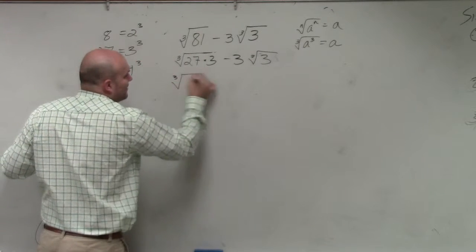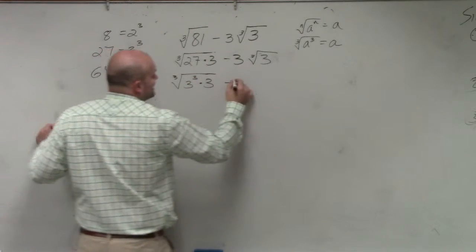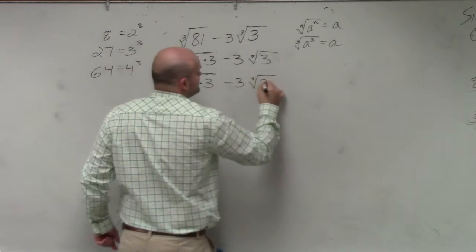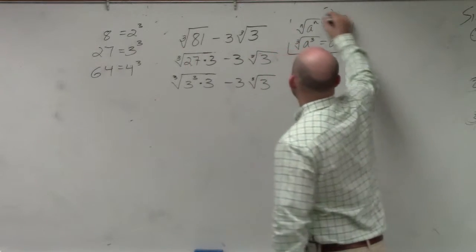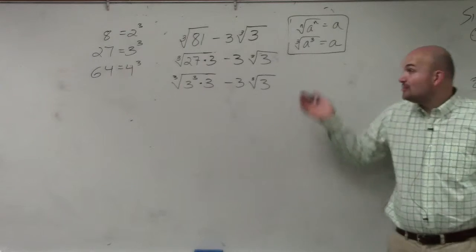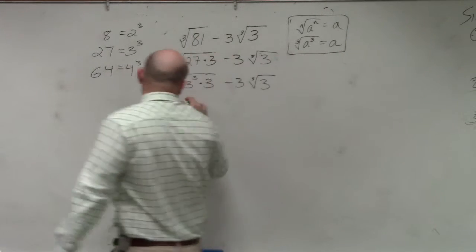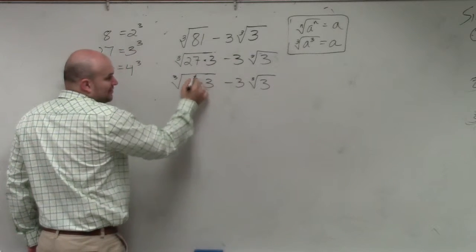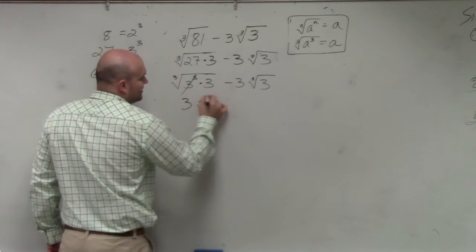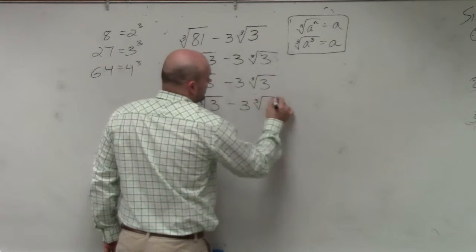So what's nice about that is since I can write that as 3 cubed, I can now simplify that using my identity element, right? Now I can use my identity element to simplify that. So what is the cube root of 3 cubed? 3. I can't take the cube root of 3. So therefore, that remains on the outside. Minus 3 cube root of 3.